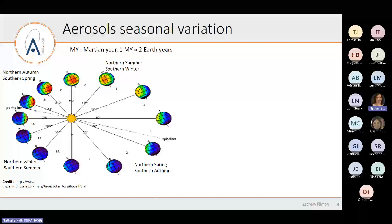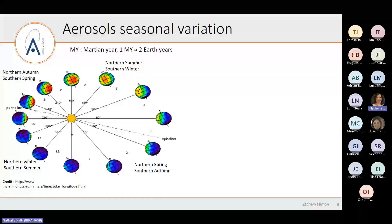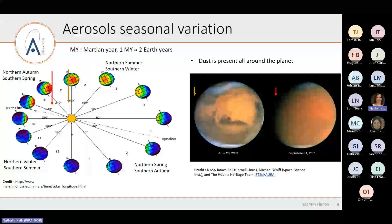Aerosols on Mars, including dust and ice, have seasonal variations, and to study them we use the solar longitude. Solar longitude is an angle between Mars and the sun. At zero degrees you are at the beginning of northern spring. At LS 70 degrees, which is aphelion when Mars is furthest from the sun, the temperature is very cold and the atmosphere will be different. As opposed to that, at perihelion when the solar longitude is at 250 degrees, Mars is very close to the sun so the temperature is higher. One Martian year, a full revolution, equals about two Earth years.